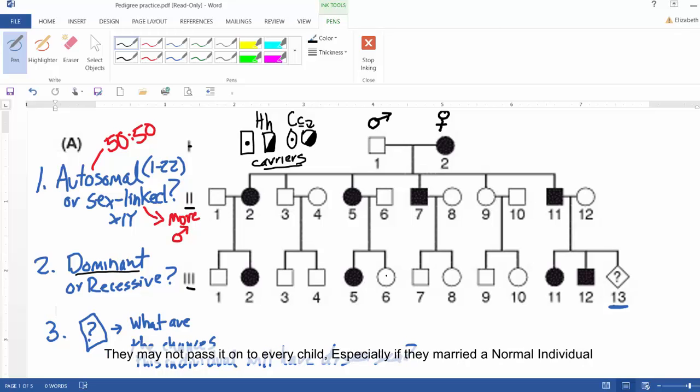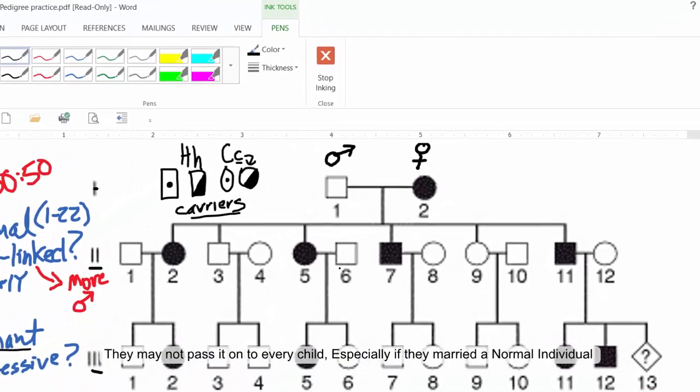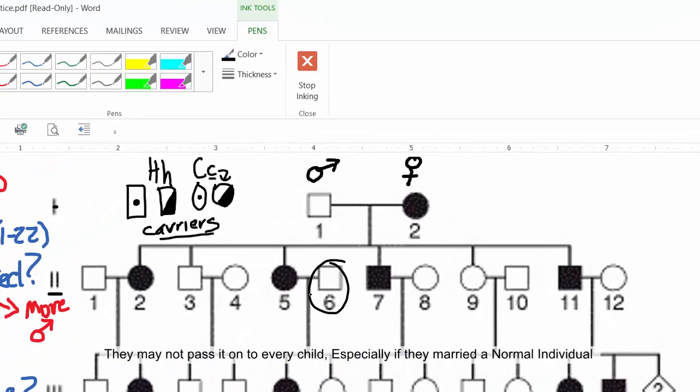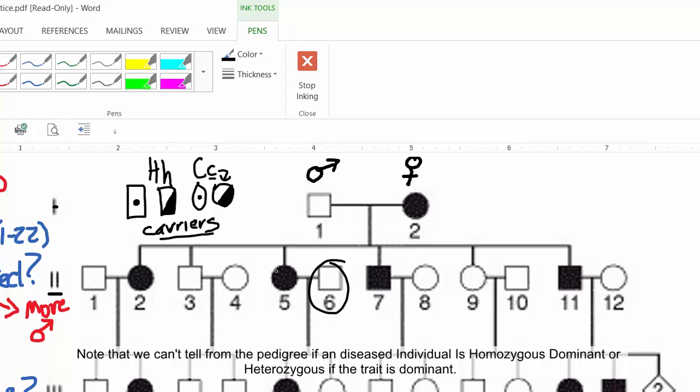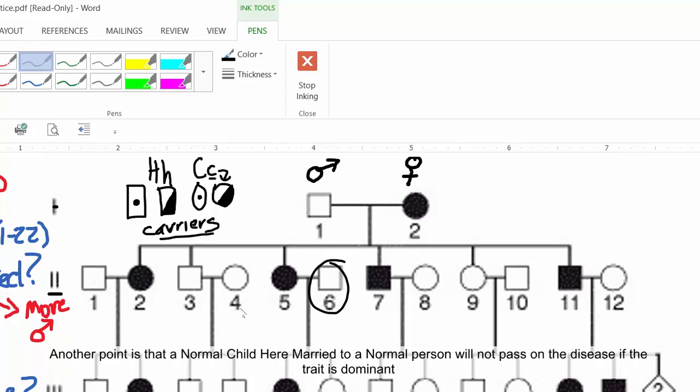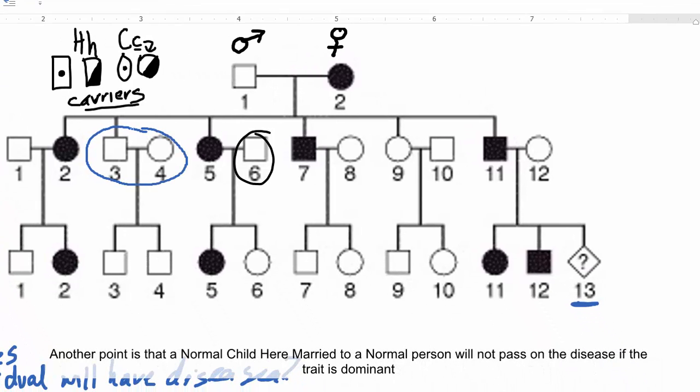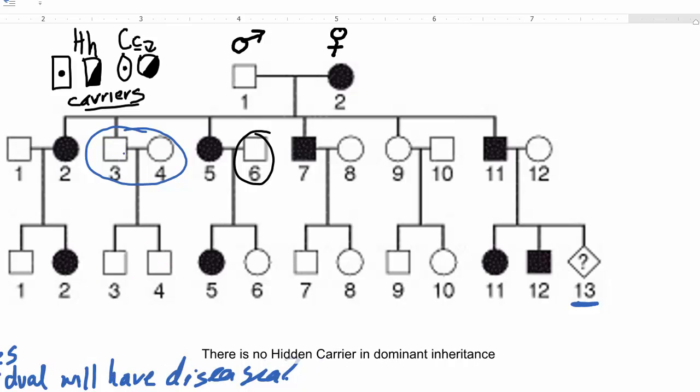They may not pass it on to every single offspring, especially if they're marrying a normal individual. We don't know if this individual is homozygous dominant or heterozygous, if this is a dominant trait. The other thing that you'll note is that the normal child here, married to a normal child, cannot pass on the disease.